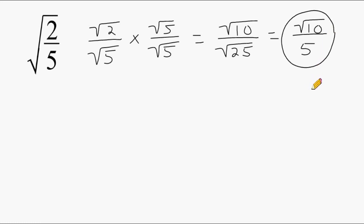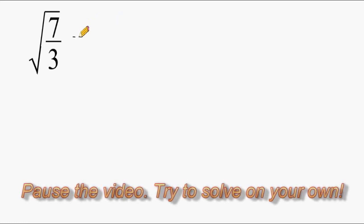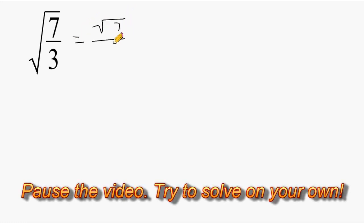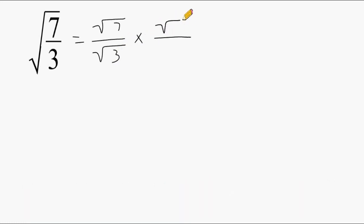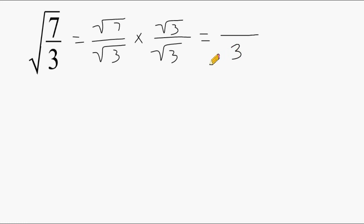Let's do another example. I'm going to rewrite this as the square root of 7 over the square root of 3, and multiply that by the square root of 3 over the square root of 3. I already know that the square root of 3 times the square root of 3 is the square root of 9, which is 3, so I'll skip that step. On the top I have the square root of 7 times the square root of 3, which is the square root of 21. That does not contain any perfect squares, so we cannot simplify further. The answer is the square root of 21 over 3.